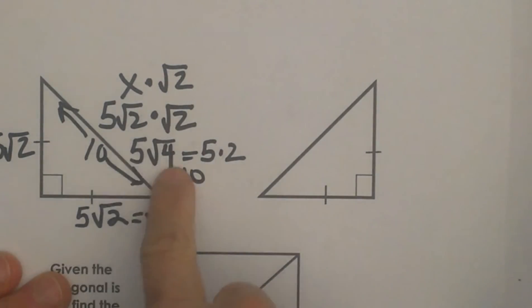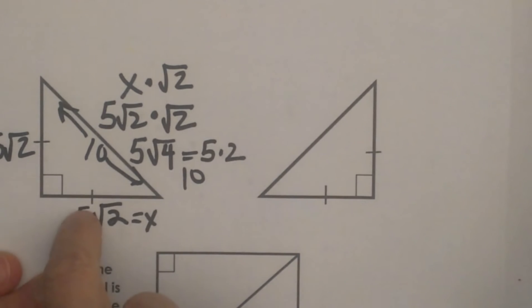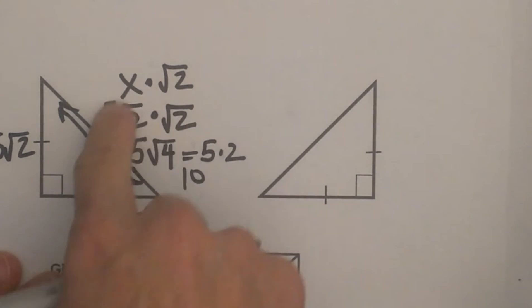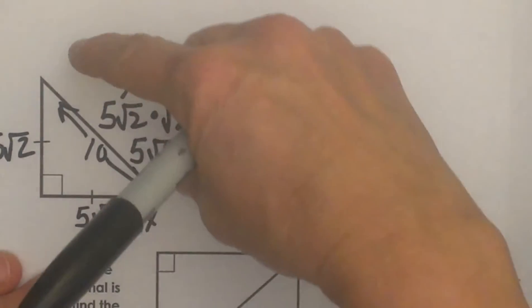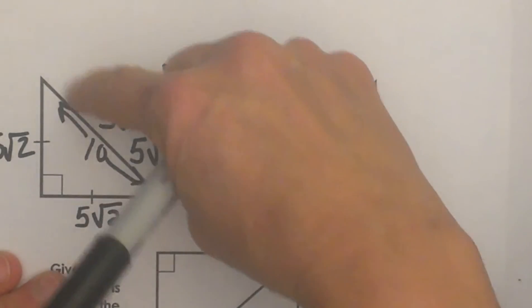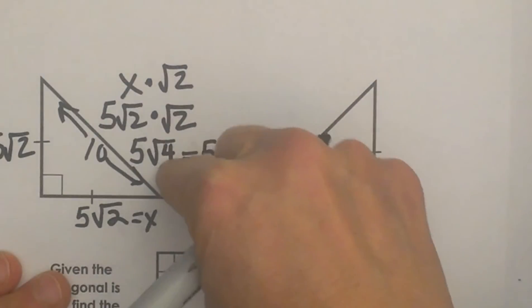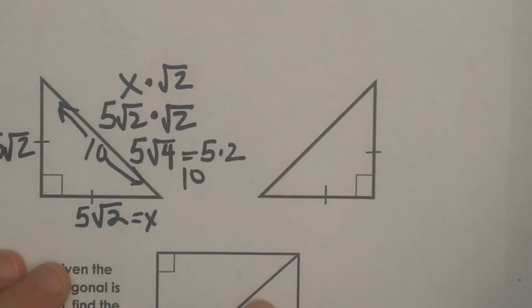So that is the first example — you are given a leg and you work to find the length of the hypotenuse. All you do is take the length of the leg and multiply it times the square root of 2 to get the hypotenuse.